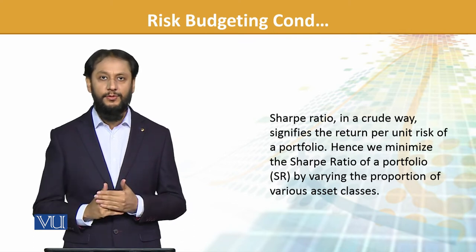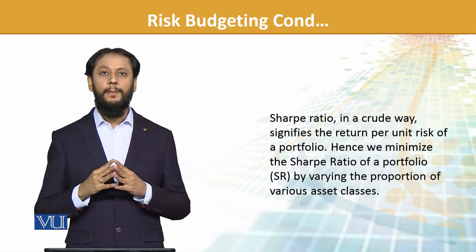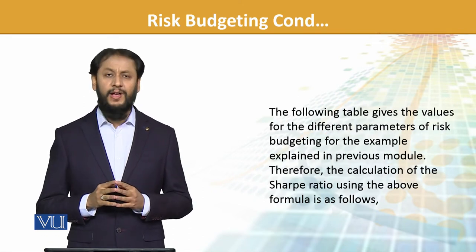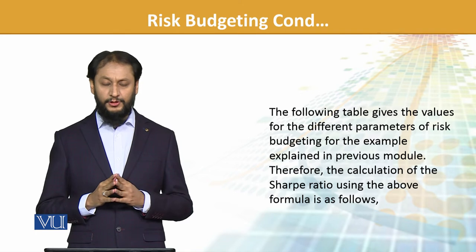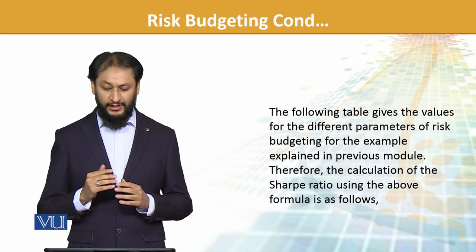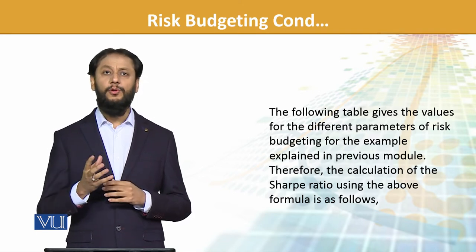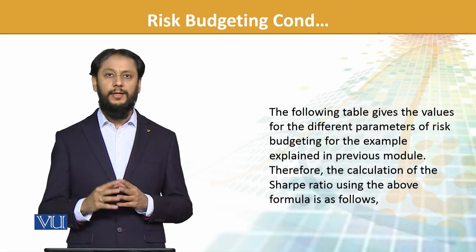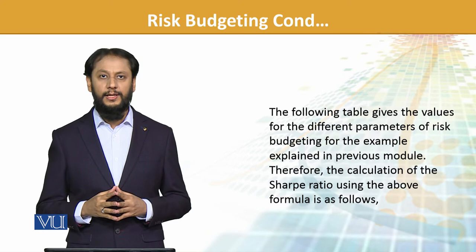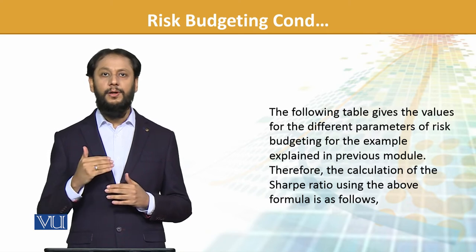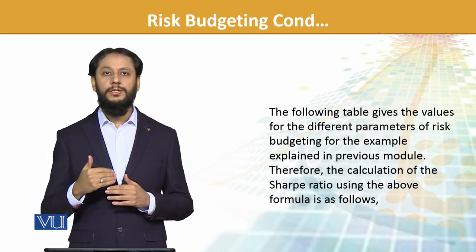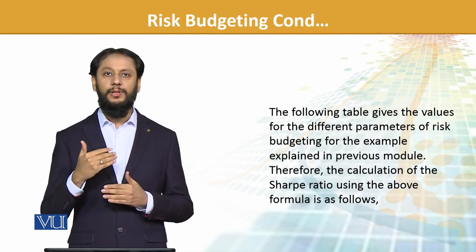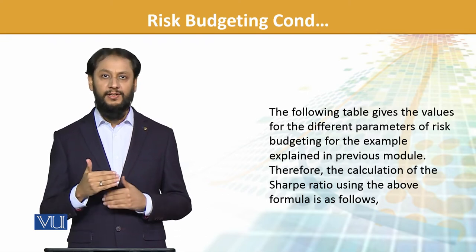Your risk will be minimized and that will get the best possible outcome. The following table gives values for the different parameters of risk budgeting, as explained in the previous module. We had an example of stocks X and Y, and we will continue with that. Some data will remain the same. The aim here is to gauge the desire to get the highest possible returns with the given level of risk.